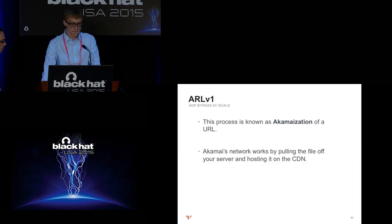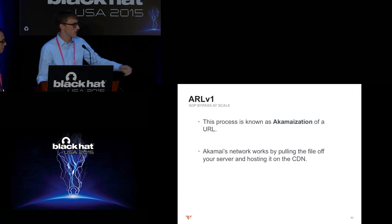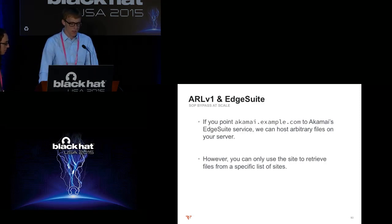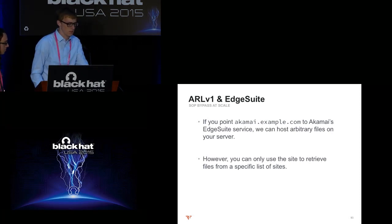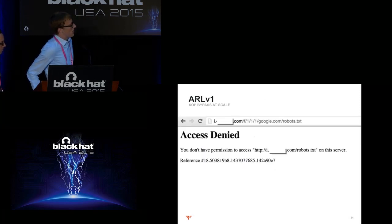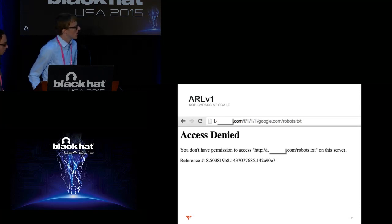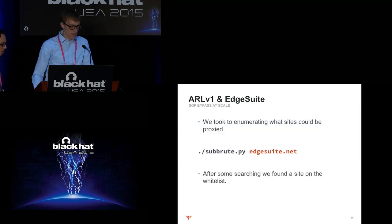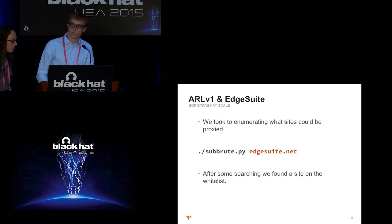If you point akamai.example.com via FreeFlow to this Akamai service, we can host arbitrary files on your server — or so we thought. When we tried, we got an access denied message trying to grab Google's robots.txt through an Akamai endpoint. There seems to be a whitelist. We enumerated edgesuite.net using SubRoot combined with Google dorking and found an actual site in the whitelist. This site was a server by Akamai hosting all versions of FlowPlayer for backwards compatibility — including the vulnerable 3.2.16 version that allows loading any plugin from any arbitrary endpoint.